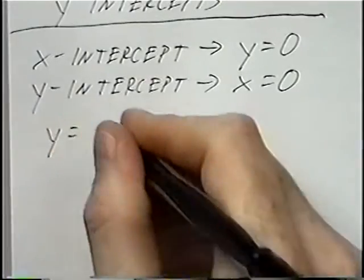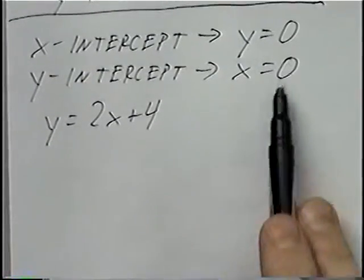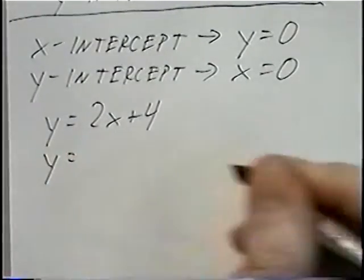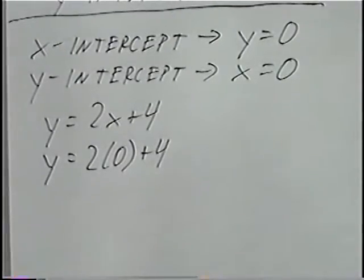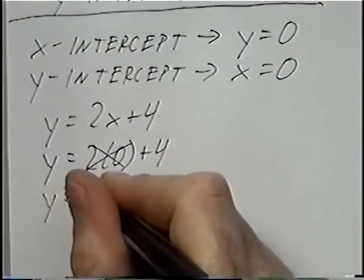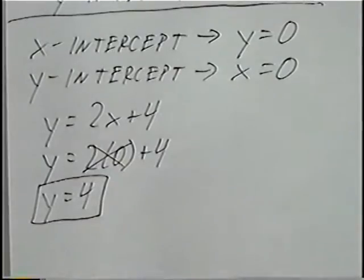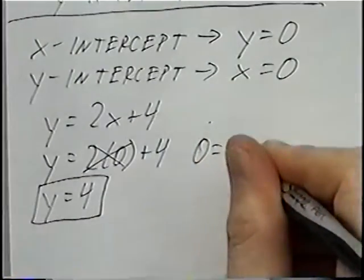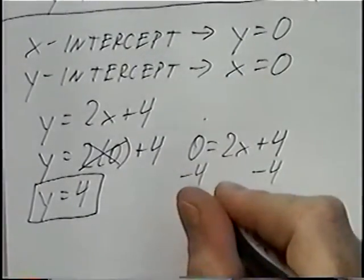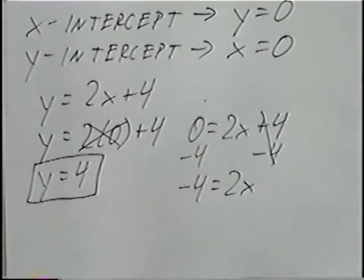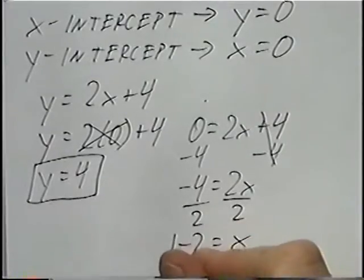The first equation to graph is y equals 2x plus 4. Instead of a t-table, we graph using intercepts by plugging in zeros. To find the y-intercept, plug zero in for x: two times zero plus four, so y equals four. To find the x-intercept, plug zero in for y: zero equals 2x plus four; subtracting four gives negative four equals 2x; dividing by two gives x equals negative two.